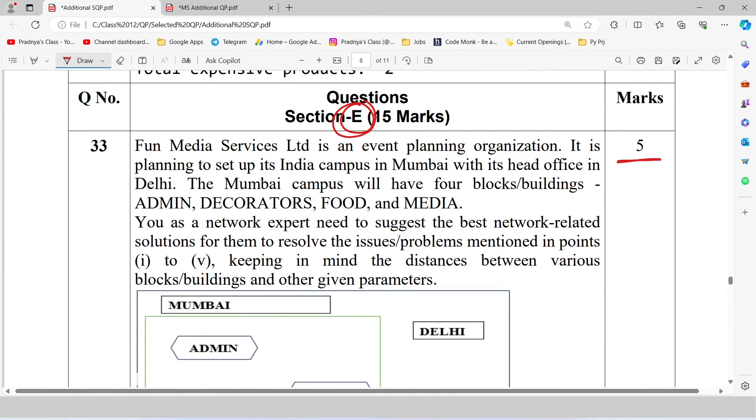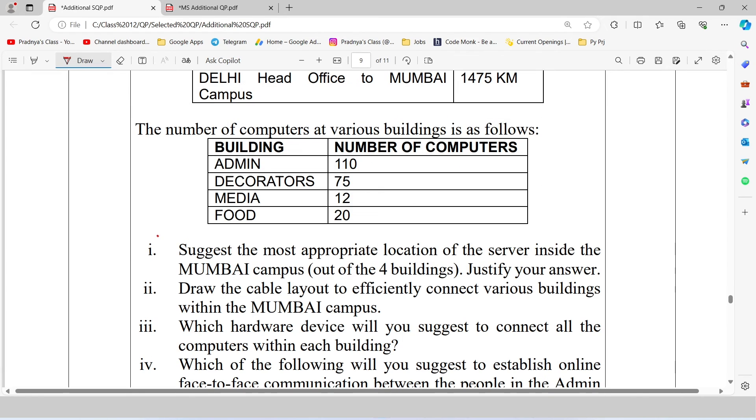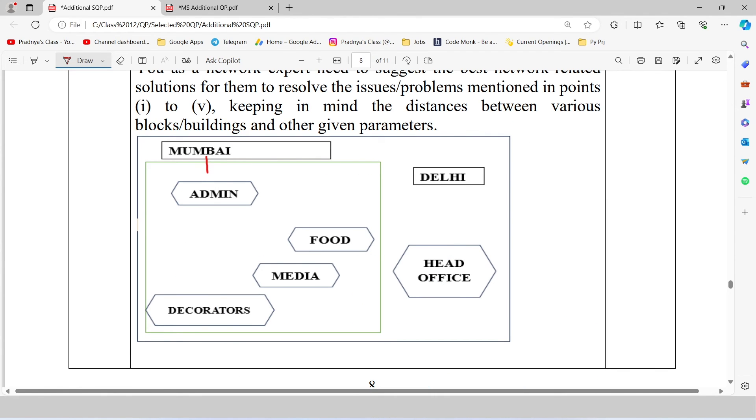Now we are at section D, in which we will be getting question for 5 marks. Generally you will be getting similar pattern of question in section E, which will be case study based question. Look at the diagram and read the question carefully. Here is the first question. Suggest the most appropriate location of the server inside Mumbai campus. From this table we could see that admin has total number of computers 110. And when we look at the diagram, yes admin is in Mumbai campus. So the admin will be the server, because it has maximum number of computers.